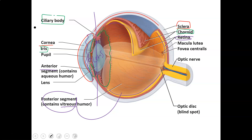The vitreous humor helps shove the retina back up against the choroid so it doesn't slip. If you lose the vitreous humor, you lose that pressure, and the retina can fall away from the choroid — and its blood supply. That's called retinal detachment, which can kill the retina because it no longer receives oxygen and nutrients.